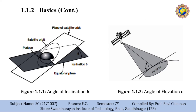Two important parameters in satellite communications are the inclination angle and the elevation angle. Figure one shows the angle of inclination, defined as the angle between the equatorial plane and the plane described by the satellite orbit. This angle is denoted delta (δ). An inclination angle of zero degrees means the satellite is exactly above the equator.